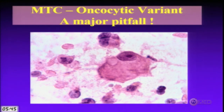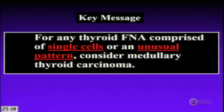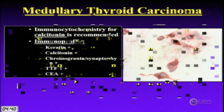Medullary carcinoma has many variants — like melanoma, it's a great mimicker. The spindle cell variant might suggest anaplastic cancer but lacks its atypia, necrosis, and mitotic activity. The oncocytic variant can look like a Hürthle cell tumor, a major pitfall since medullary requires total thyroidectomy and neck dissection while Hürthle cell needs only lobectomy. Tip: in the oncocytic variant, most cells lack the big prominent macronucleolus expected in true Hürthle cell neoplasm. Always consider medullary cancer for single-cell or unusual pattern thyroid aspirates.